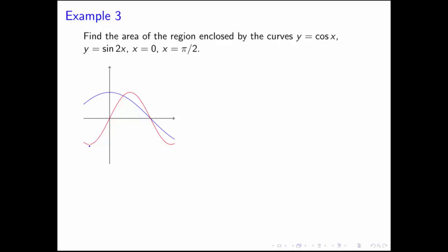It would help to identify which of these two curves is the sine 2x curve and which is the cosine x curve. We know that cosine x at 0 is equal to 1, so the blue curve must be cosine x, and the red curve is sine of 2x. So we need to know where these two curves are equal to each other — we need to find the intersection points, just like in the previous example.